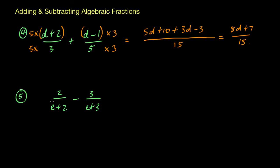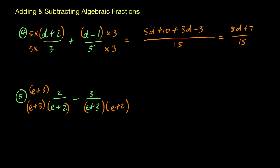This one is going to be the hardest but it's the same principle. We're going to multiply e plus 2 by something so it becomes the same as the right-hand side, so we multiply by e plus 3. That gives e plus 3 multiplying onto e plus 2. Over here we've got an e plus 3, and to make it match the other side we multiply by e plus 2. So both denominators become e plus 3 times e plus 2. Up the top, multiplying the left side by e plus 3 means e plus 3 gets multiplied onto that 2, and the minus 3 on the right gets multiplied by e plus 2.